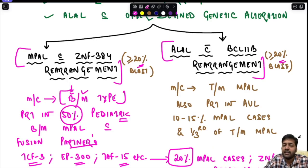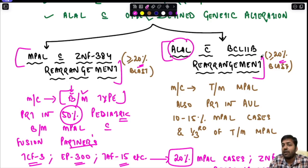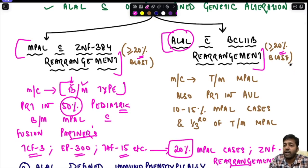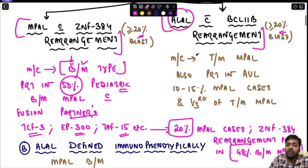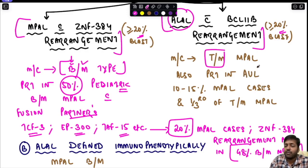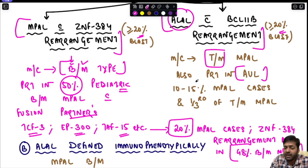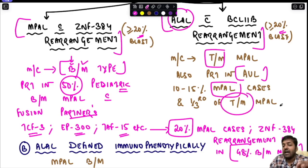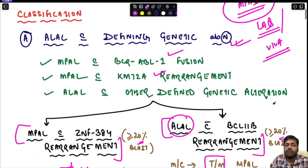For acute leukemia of ambiguous lineage with BCL11B rearrangement, 20% or more blasts are required for diagnosis. The most common immunophenotype is T-lymphoid or myeloid MPAL. Cases can also present as acute undifferentiated leukemia. This rearrangement accounts for 10–15% of MPAL cases and nearly one third of all T-lymphoid or myeloid immunophenotype cases.